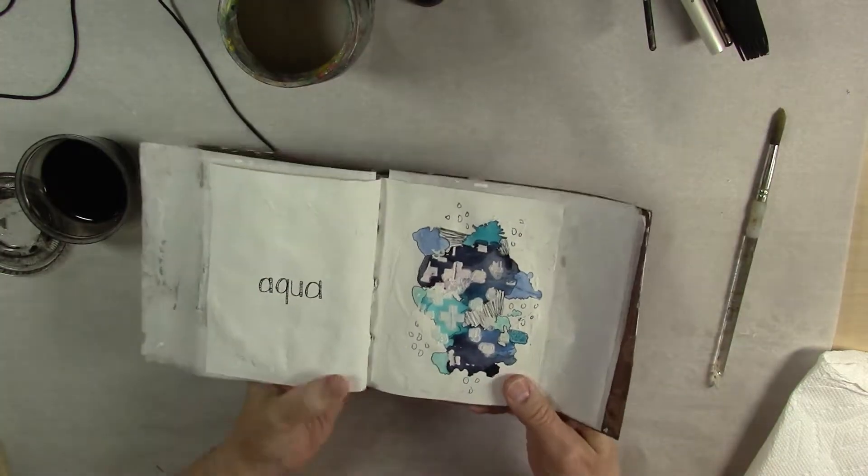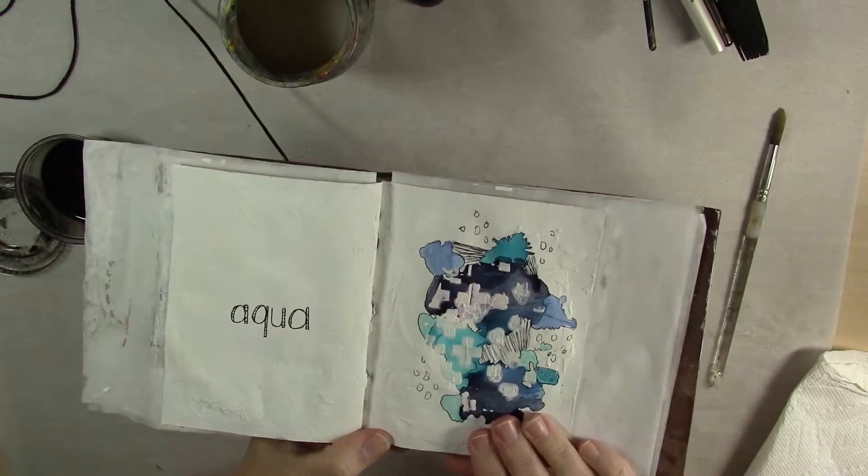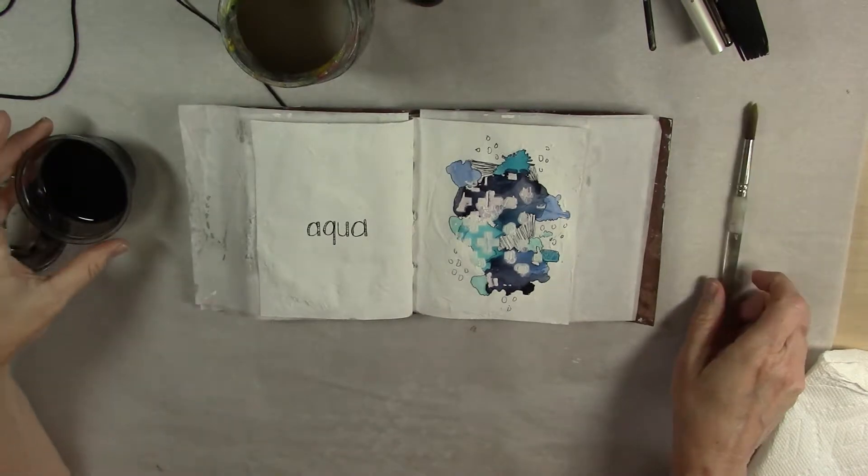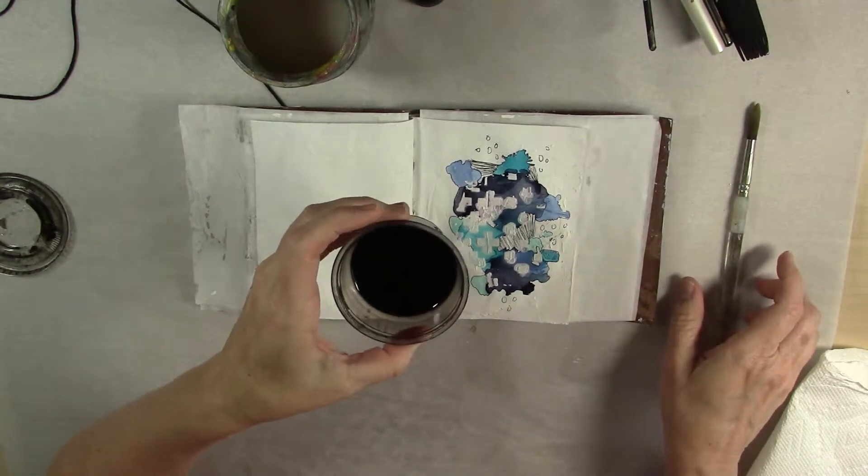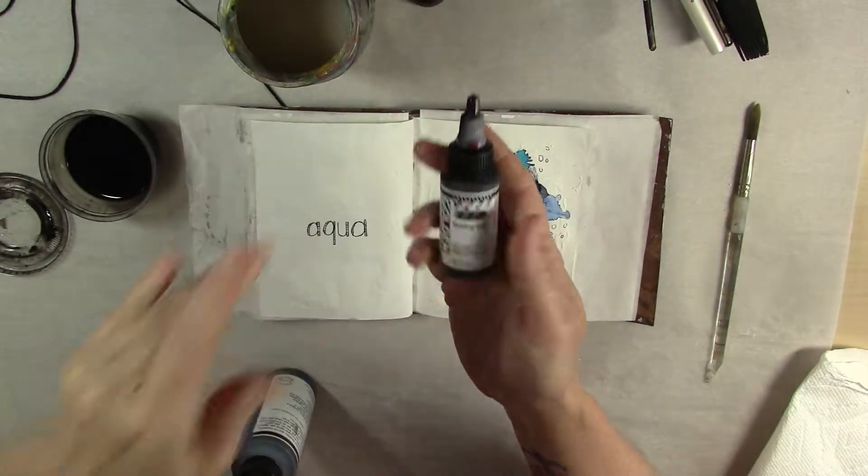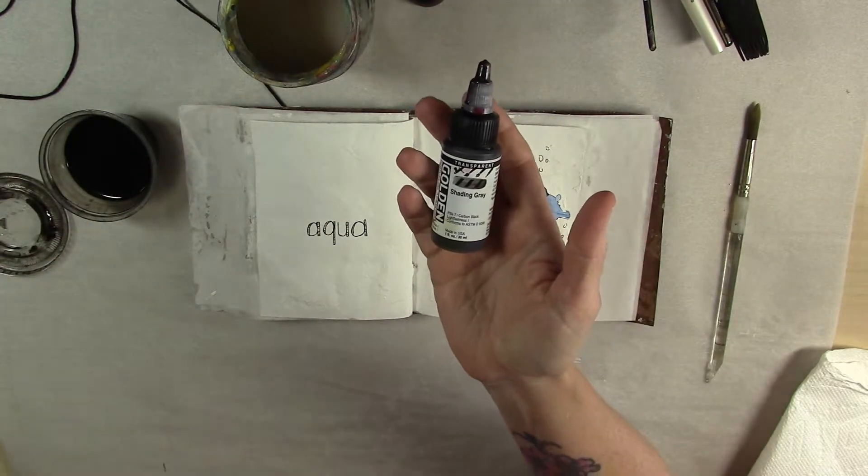Okay, so we are back. Our crackle paste has dried on this side of the page, so now we're going to do the next step. So I've got some watered down high flow acrylic paint and shading gray. Actually, I think I might have some carbon black in that as well.